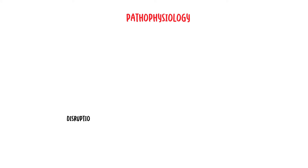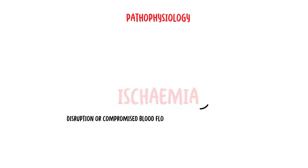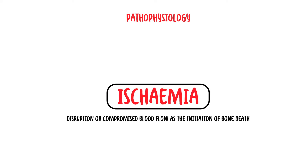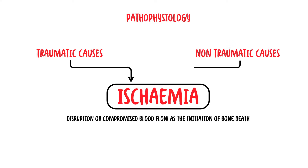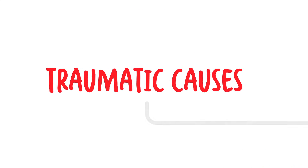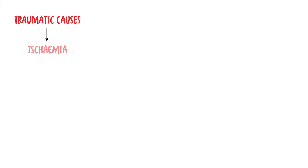The pathophysiology of osteonecrosis is not completely understood, but most theories point towards a disruption or compromised blood flow as the initiation of bone death. This disruption could occur from a traumatic or non-traumatic cause. Traumatic causes of bone death can be thought of as a direct loss or occlusion of arterial flow to the bone, leading to ischemia.